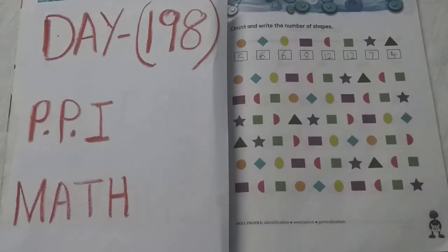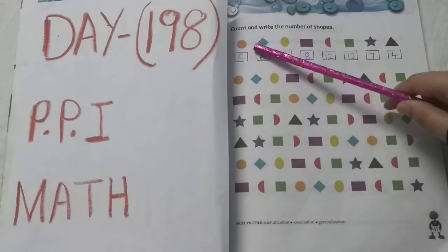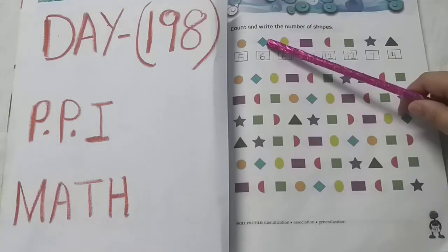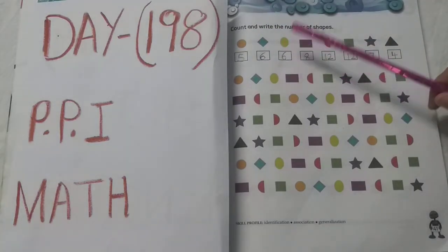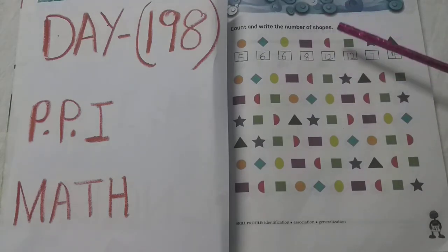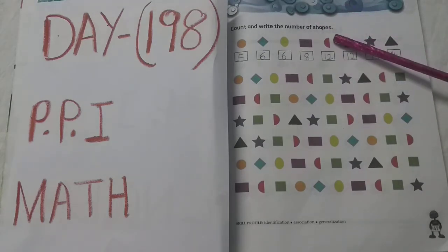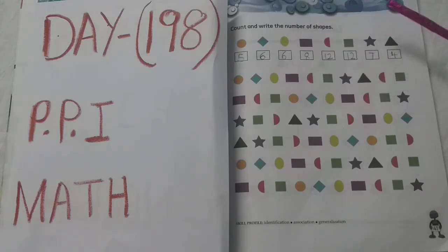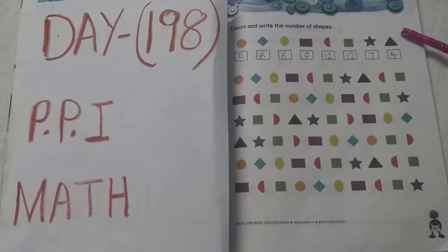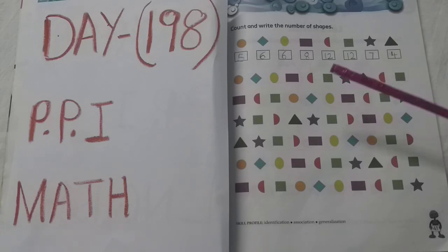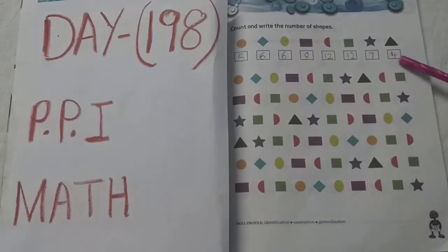So these are shapes. Once again, read the names of shapes, children: circle, oval, rectangle, semicircle, square, star, triangle. So these are shapes — you have to count them, then you have to write the numbers. Do it and send it to me. Thank you all.